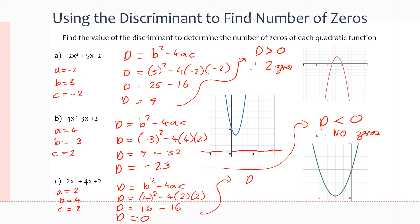Since the discriminant equals zero, we have exactly one zero, one x-intercept. Looking at the graph, it touches the x-axis exactly once, right at the vertex. This makes sense: if a parabola's discriminant is zero, its vertex sits right on the x-axis. That is the only scenario where there is only one x-intercept — touching at any other point would give two intercepts.